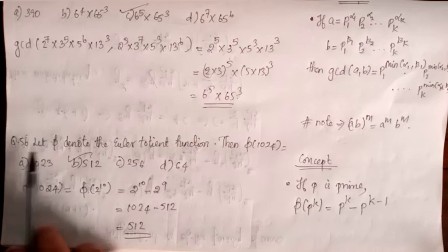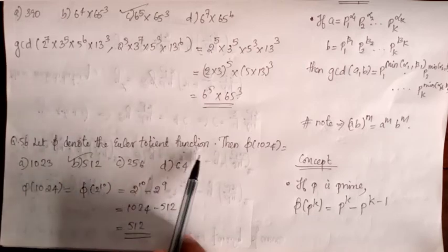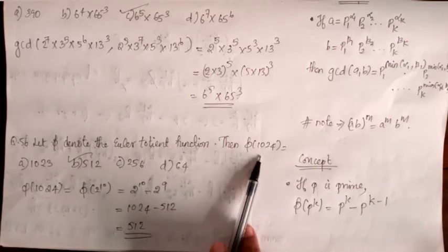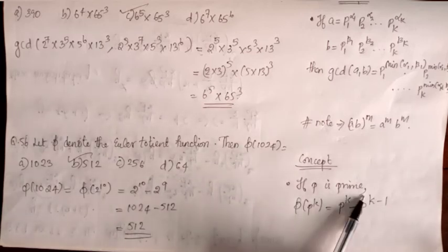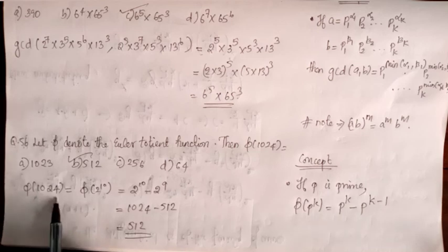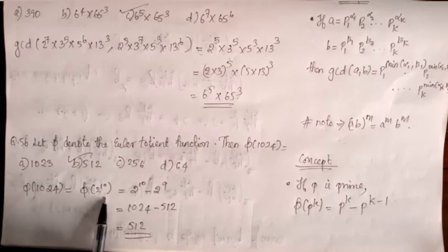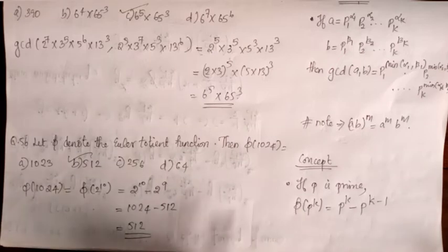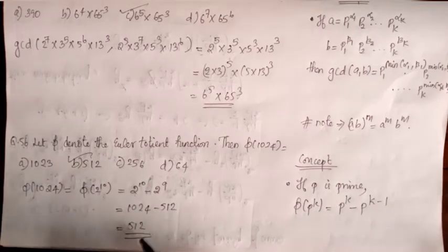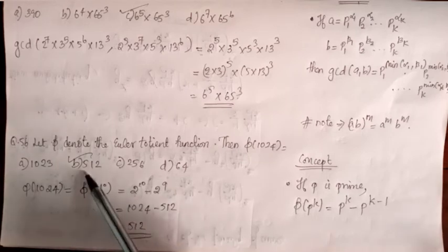Question 56: Let φ denote the Euler totient function; find φ(1024). So φ(1024) = φ(2^10) = 2^10 - 2^9. Since 2^10 = 1024 and 2^9 = 512, the answer is 1024 - 512 = 512. Option B is correct.